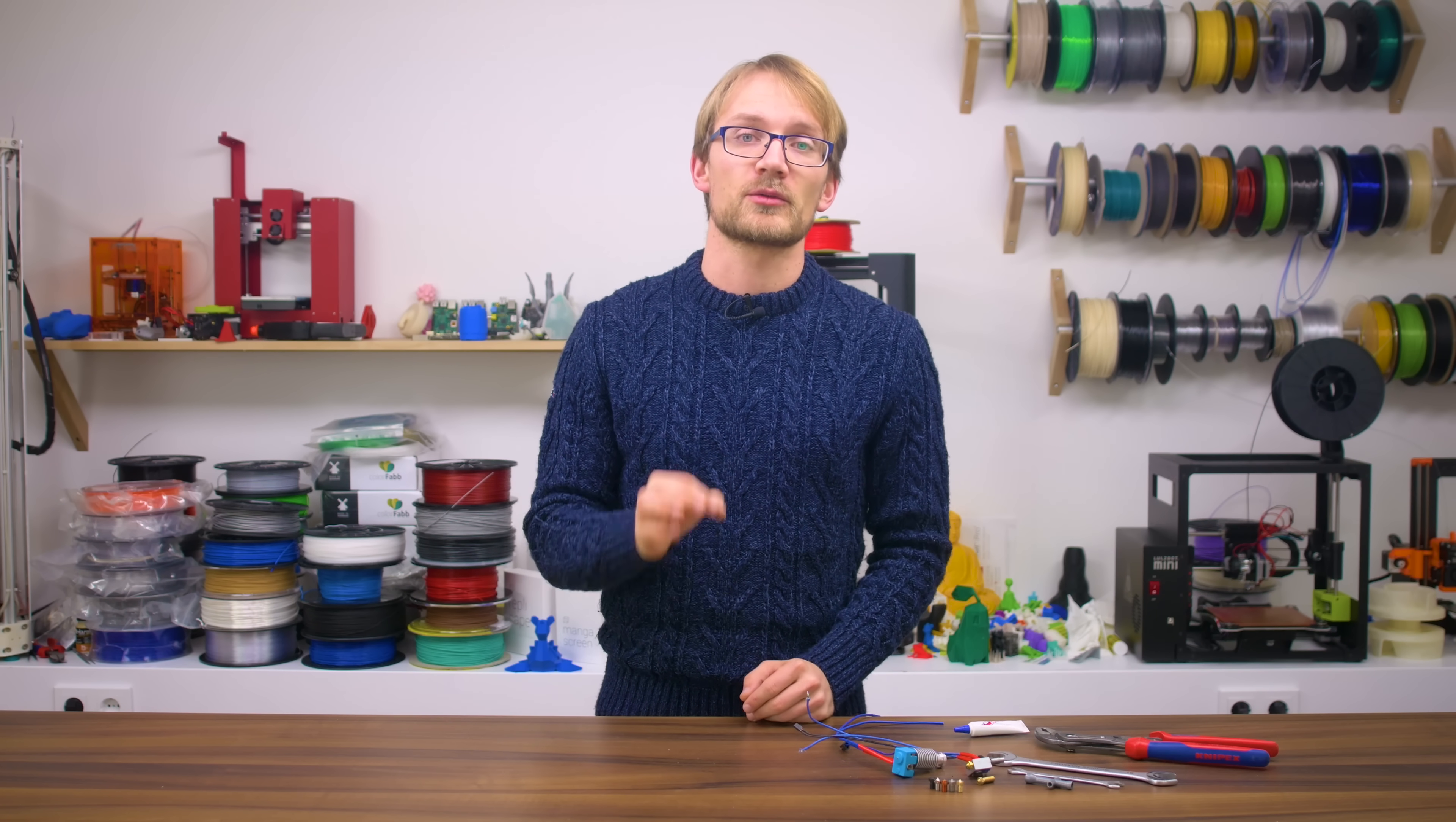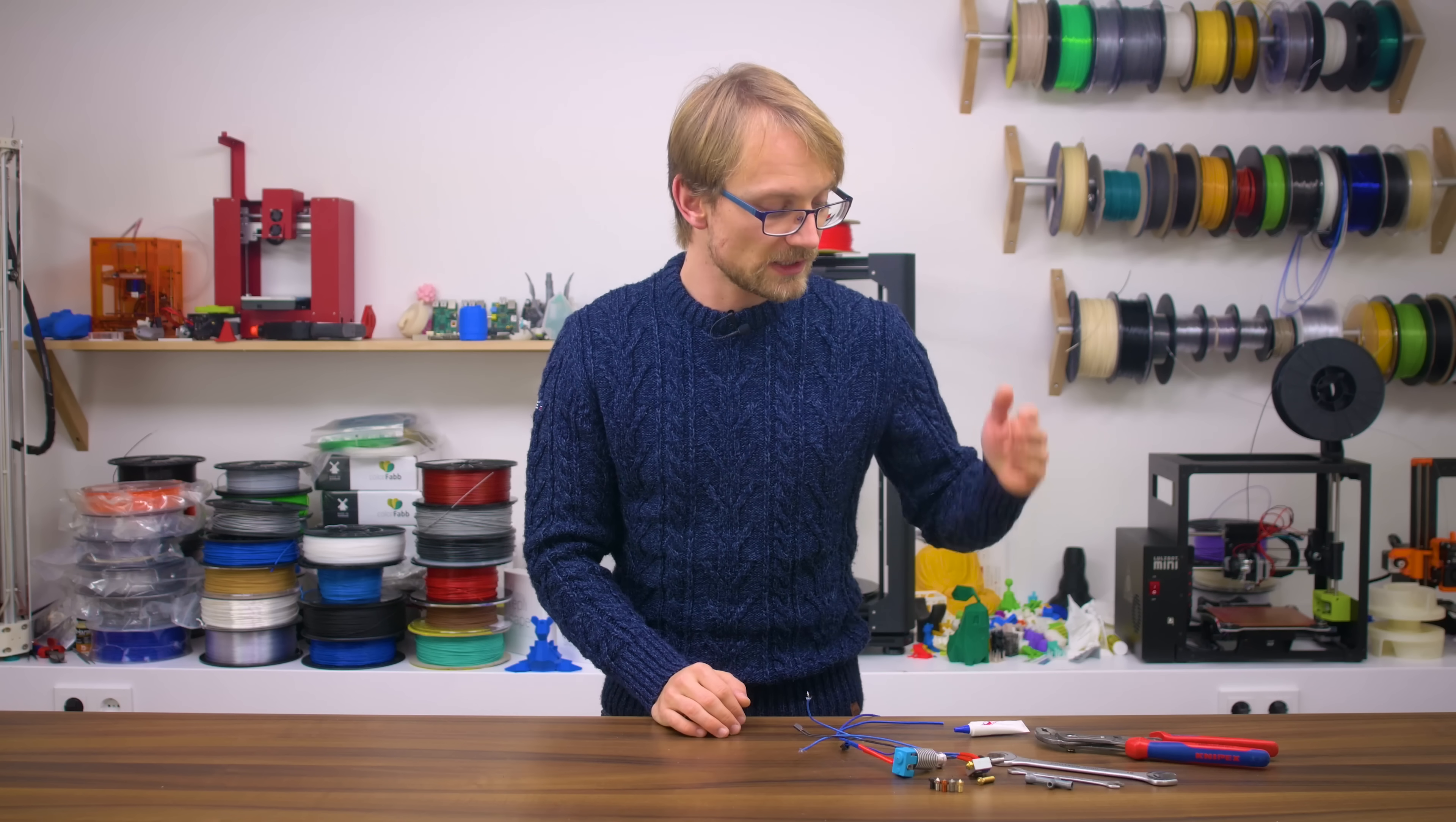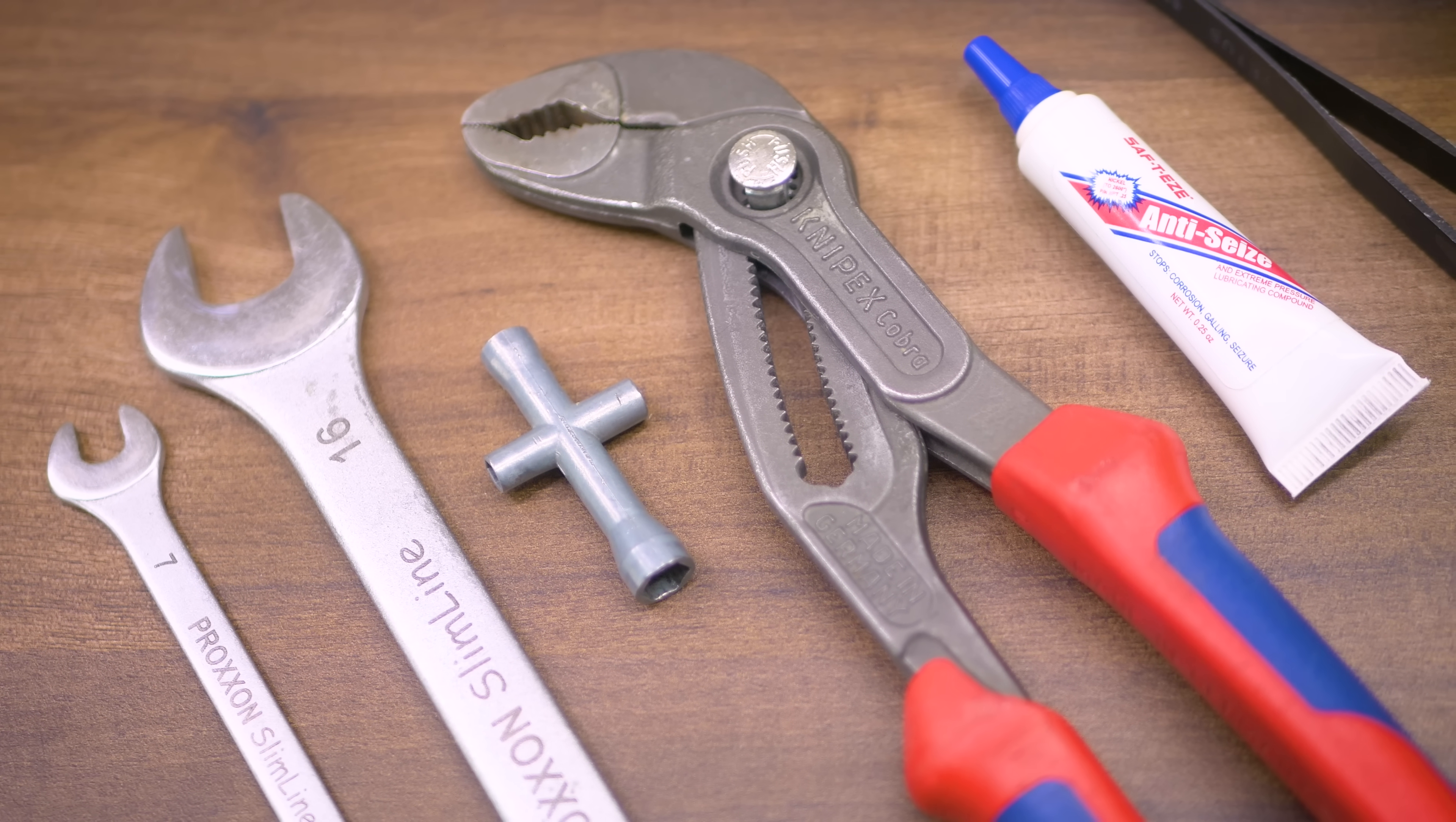So how do you swap a nozzle without ruining your hotend? While there are a ton of different hotend designs out there, this process should work for most hotends that use this style of nozzle. If in doubt, check with your manufacturer first. You'll need a wrench or a socket the right size for your nozzle, which is commonly 7mm, as well as a wrench or some pliers to hold your hotend in place. I'd also recommend grabbing some high-temperature anti-seize compound.